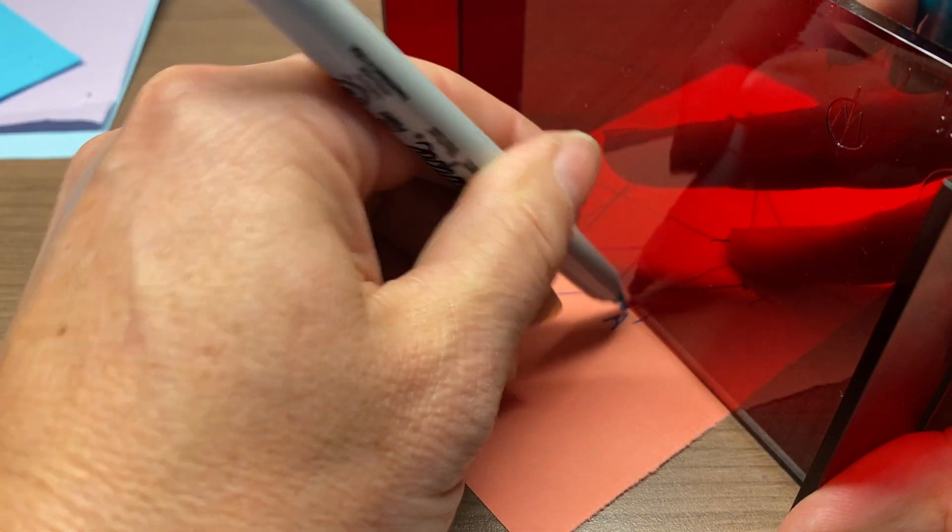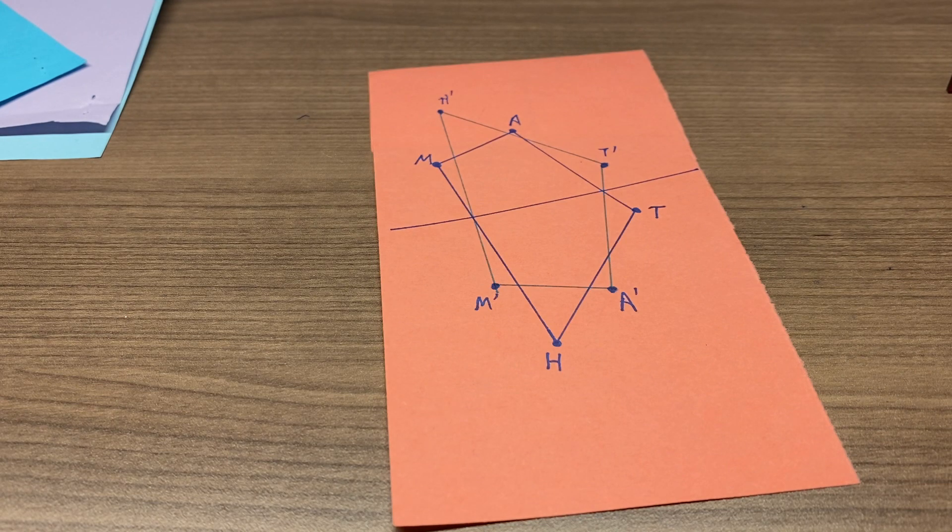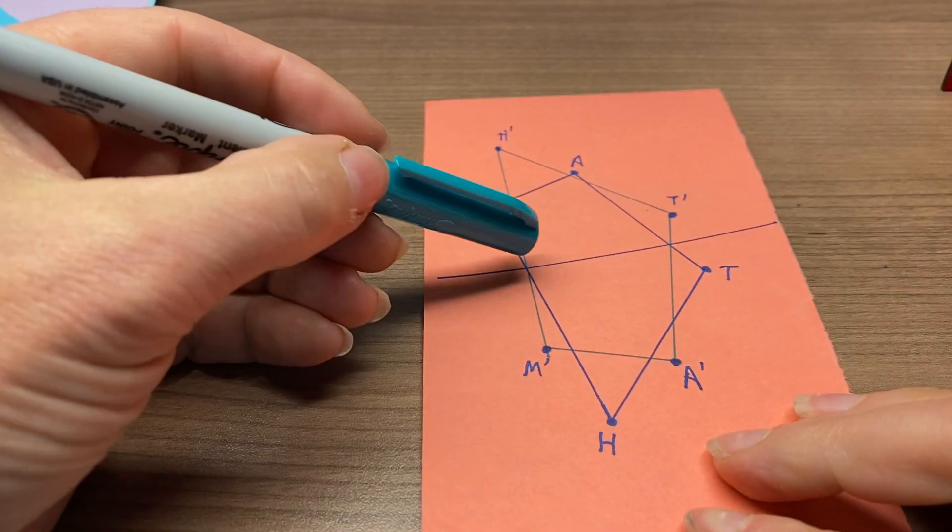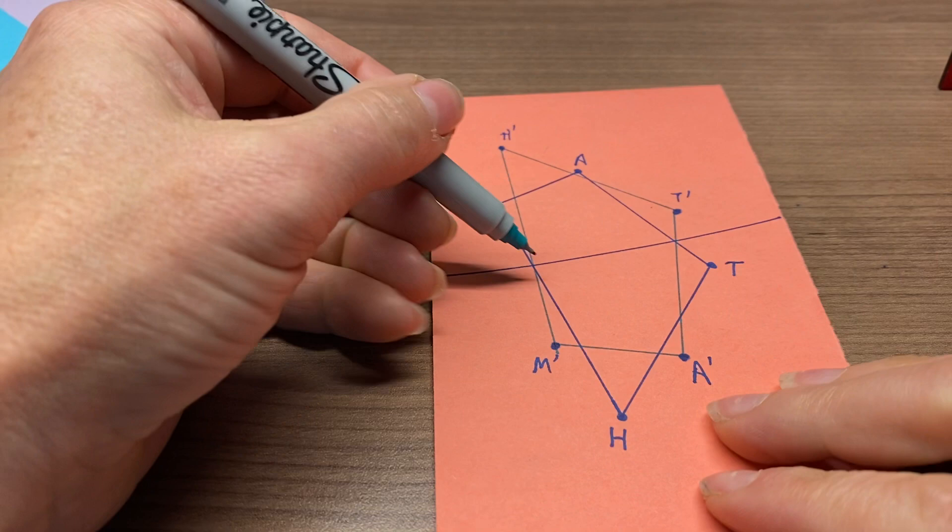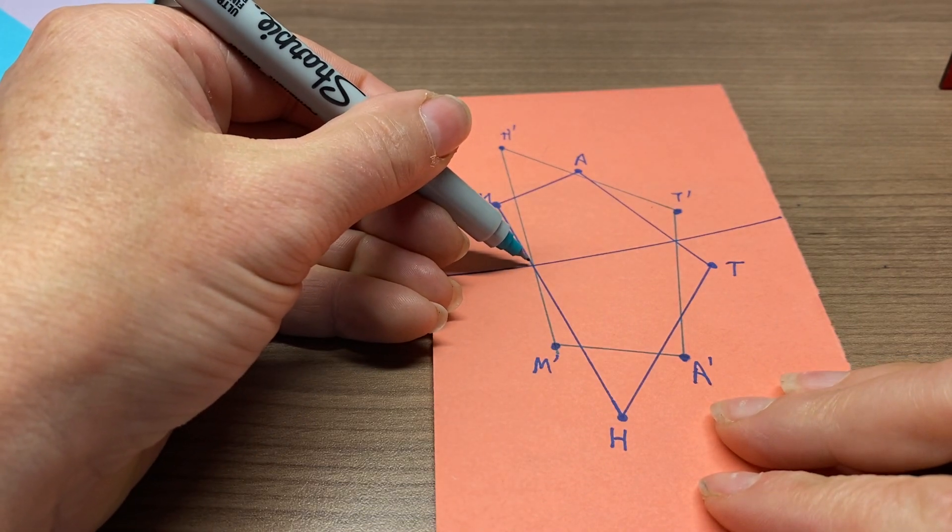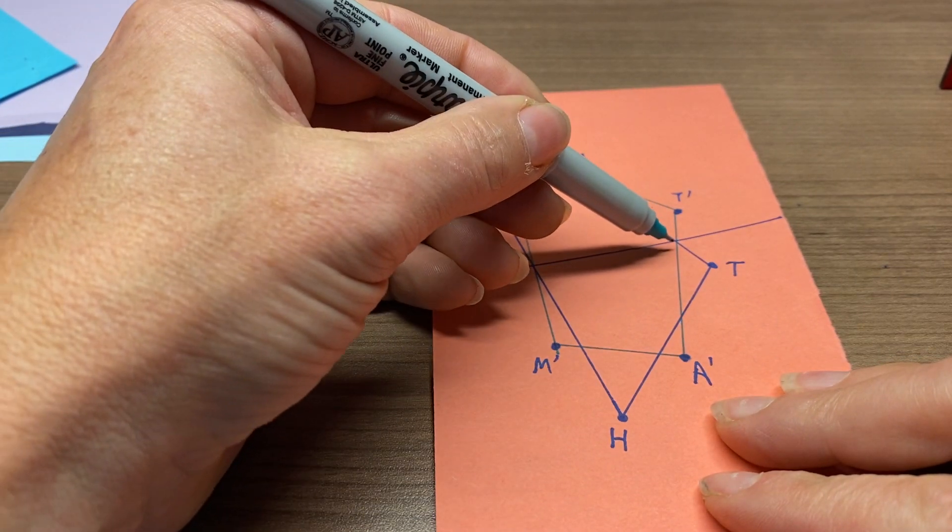And then something that we're looking for, we're not only looking for it to be upside down now, but we're also looking for accuracy here where we had a point that was on the reflection line. Again, in the image, the point should still be on the reflection line.